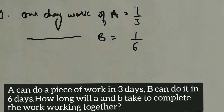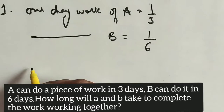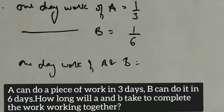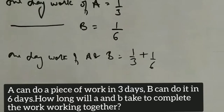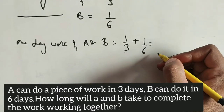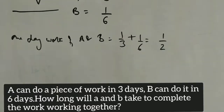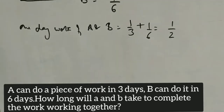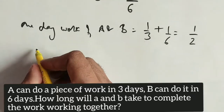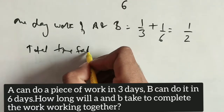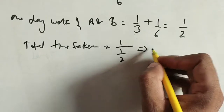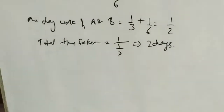Now, how long will A and B take to complete the work together? If they start working together, the combined 1-day work of A and B will be the sum: 1/3 plus 1/6, which equals 1/2. It means they complete 1/2 of the work per day. So, total time taken will be the reciprocal of their 1-day work: 1 divided by 1/2 equals 2 days. They will complete it in 2 days.